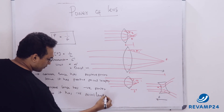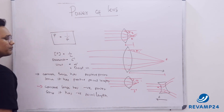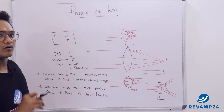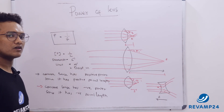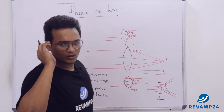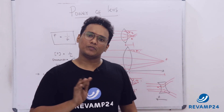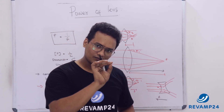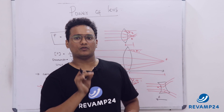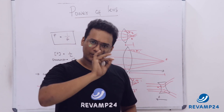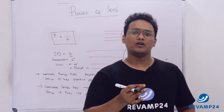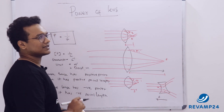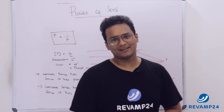These are very important points. Power is 1 by f. Is that value always positive? No — for a convex lens it is positive, and for a concave lens it is negative. For those who use spectacles, the lens is provided with some power value, such as plus 1.2, minus 1.2, plus 2.25, or minus 0.25. If the power is plus, then that is a convex lens; if it is minus, then that is a concave lens. Thank you.